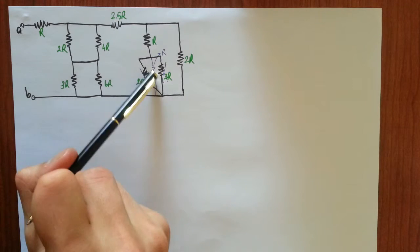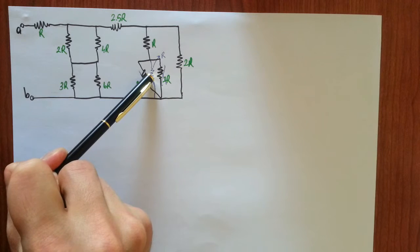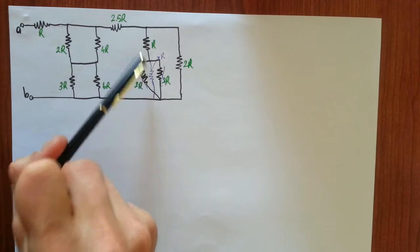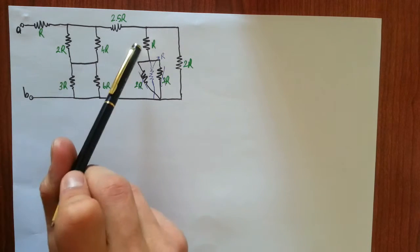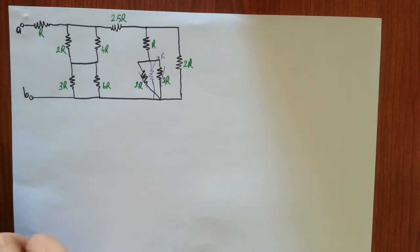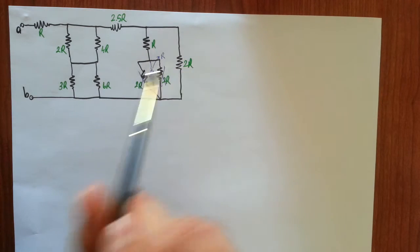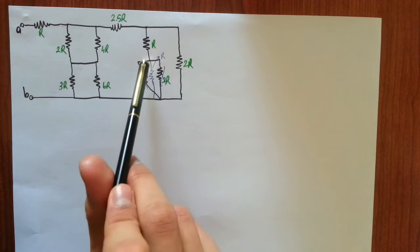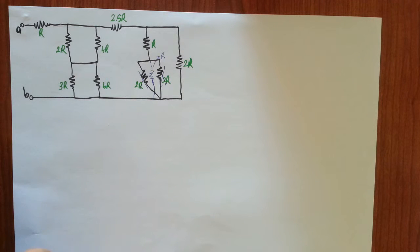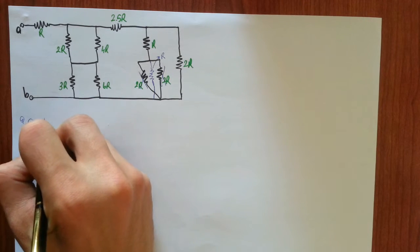Here we have two series resistors with resistances R. They make two R one single resistor. And here we also have two R resistors, so let's reduce them into one single resistor with resistance value R.